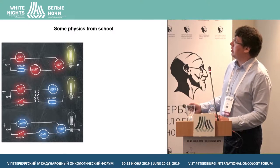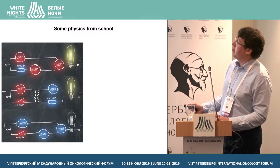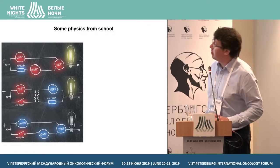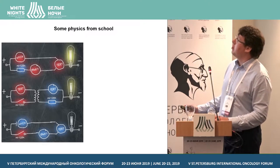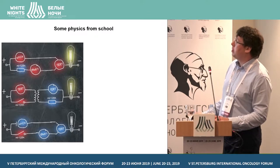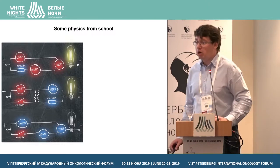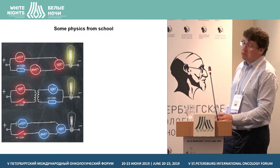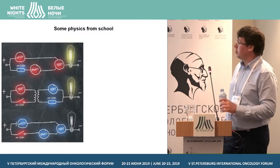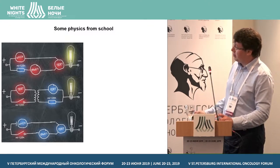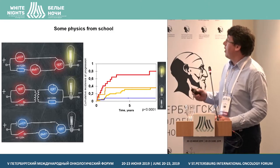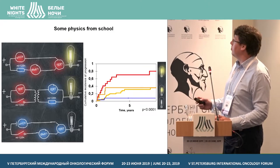Something from physics from school: if we have an electric circuit with either MYCN activation and subsequent TERT activation, or down-regulation of microRNA-128a, we have a big current and bright light. In the intermediate situation, either TERT up-regulation or microRNA-128a down-regulation is associated with intermediate survival — so-called intermediate current. Absent MYCN, absent TERT, and retained microRNA-128a expression corresponds to the lowest current, and the same pattern is seen with cumulative incidence of progression.